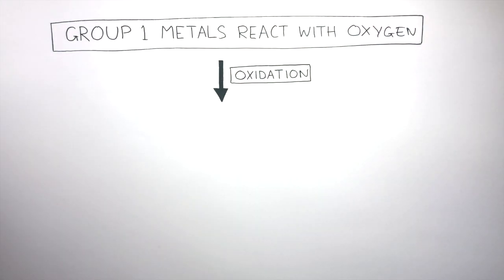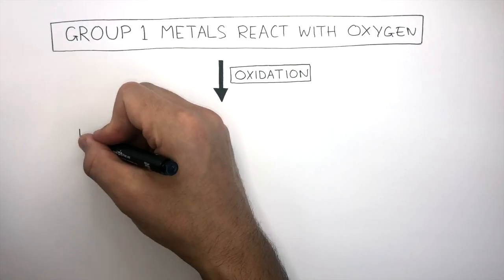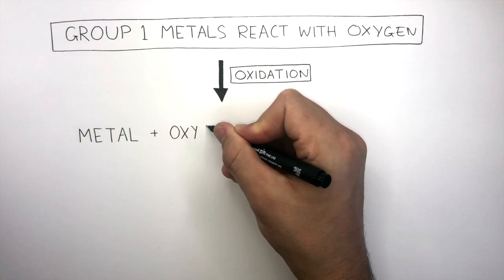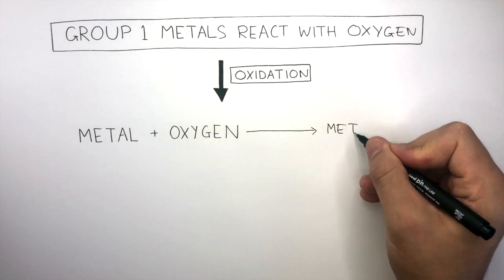Oxidation is when any substance reacts with oxygen. The general word equation for any alkali metal reacting with oxygen is: metal reacts with oxygen, forms metal oxides.